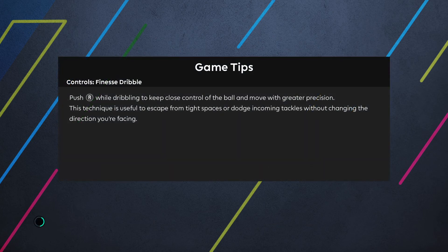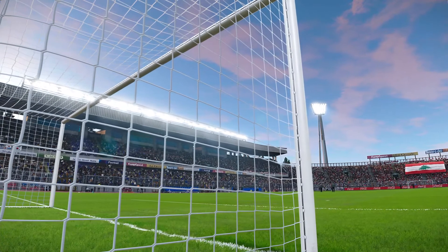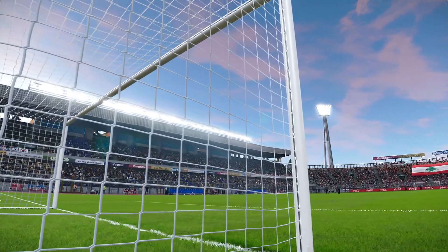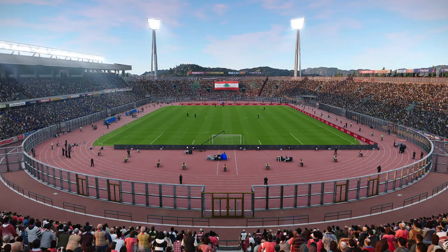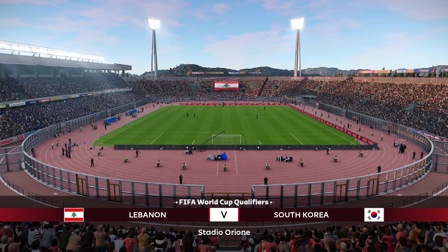This fixture will be played at the Saida Stadium in Lebanon. That stadium does not feature on the virtual pitch that I use, but one of the generic national team stadiums looks very much like it — the Stadio Orione. Here's a look at the stand-in for the Saida Stadium in Lebanon.